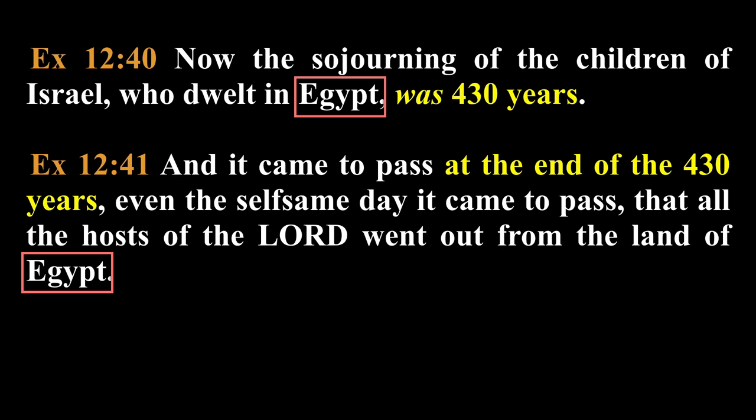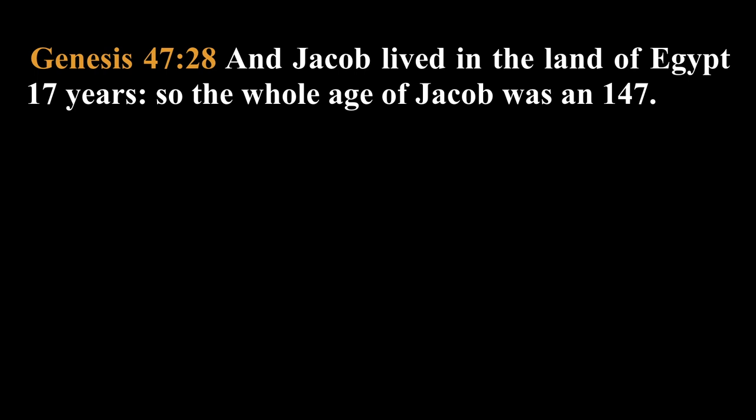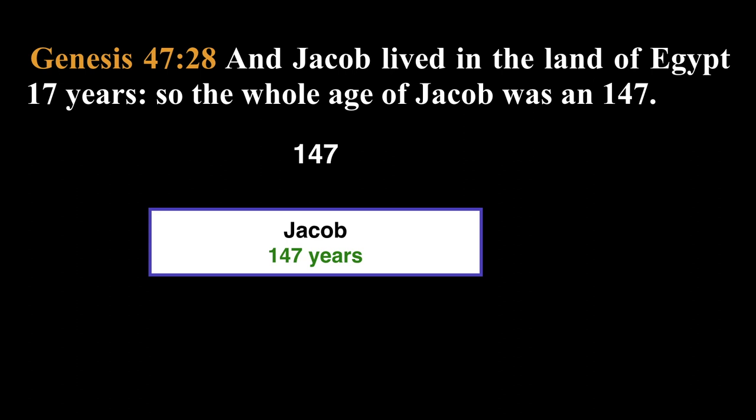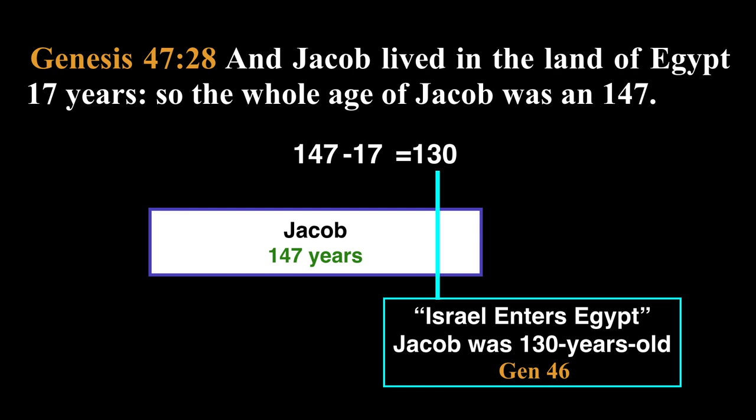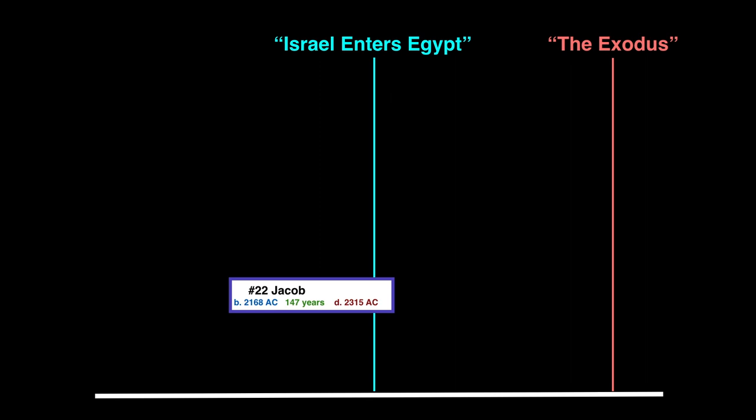The starting point of this period would be attached back to Genesis 47:28 that says, And Jacob lived in the land of Egypt 17 years. So the whole age of Jacob was 147 years. So, Jacob lived for 147 years, and of his 147 years, we can subtract back the 17 years that he lived in Egypt, which gives us the 130. This means that at 130 years old, Jacob and the rest of the nation of Israel entered Egypt, which is recalled in Genesis 46. So with Exodus 12:40 in mind, we have Israel entering into Egypt in the 130th year of Jacob. Then, the 430 years of the Exodus from Exodus 12:40 is the length of time between these two events.